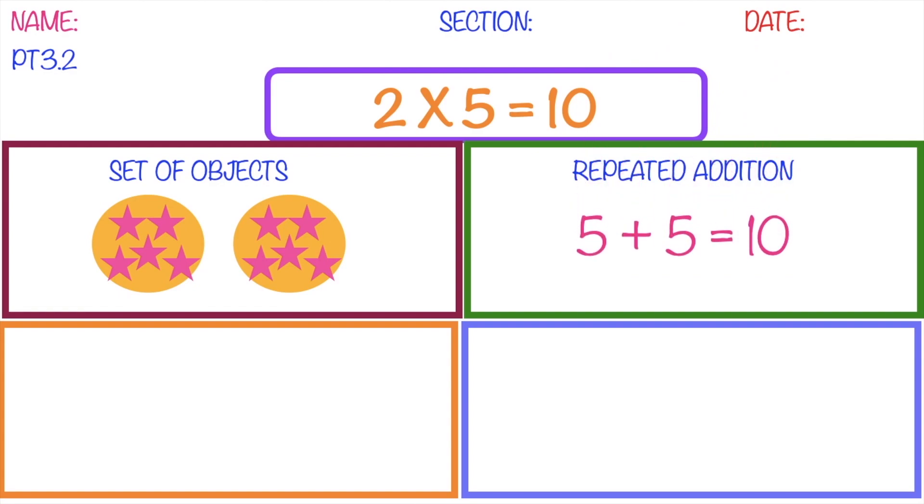Then on the third box, we're going to illustrate it using the number line. The first thing that you need to do is to draw the number line. Take note children, you don't need to write all of the numbers. Just write the skip counting only, starts at 0. Then since our multiplication sentence is 2 times 5,